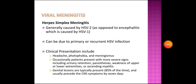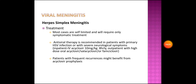Herpes simplex meningitis is generally caused by HSV-2, as opposed to encephalitis which is caused by HSV-1. It can be due to primary or recurrent HSV infection. Clinical presentations include headache, photophobia, and meningismus. Occasionally patients present with more severe signs including urinary retention, paresthesia, weakness of upper or lower extremities, or ascending myelitis. Genital lesions are typically present 85% of the time and usually precede CNS symptoms by seven days.